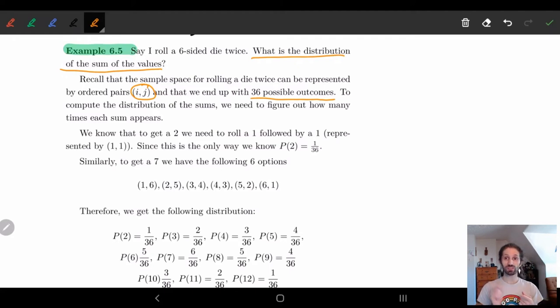So in order to get the distribution of the sum of the values, we need to basically calculate the probability that we get any particular sum. So let's do this through an example by looking at the sum for two. So in order to get a two, we know there's only one option. We need to get a one and a one. That's it. There's a, that's our only option.